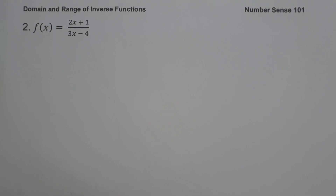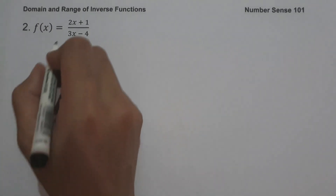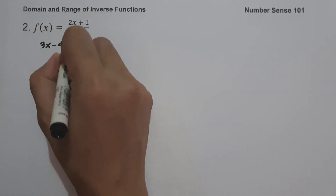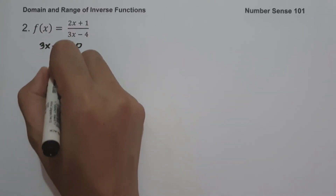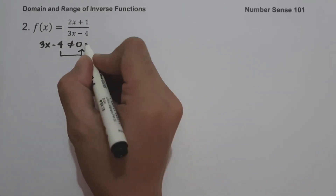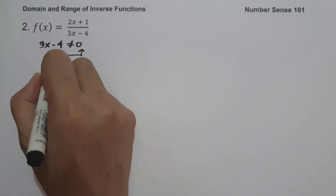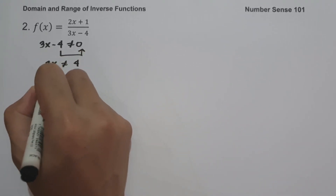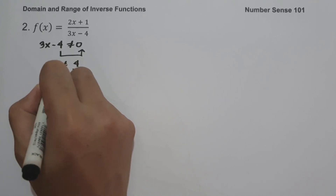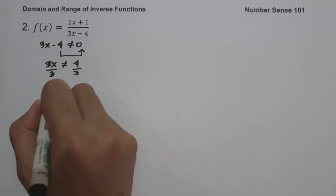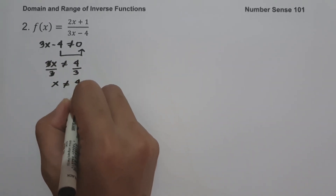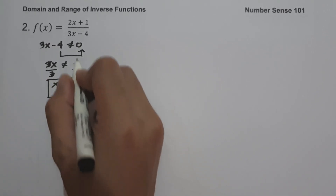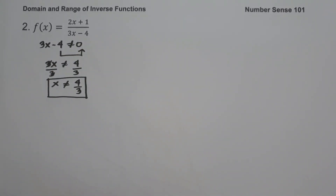Setting 3x minus 4 not equal to 0, we move negative 4 to the side of 0 to get 3x not equal to 4. Dividing both sides by 3, we get x not equal to 4 over 3. That means if you substitute 4 over 3 into the given function, it will give us undefined.